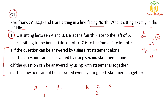Then E is at the fourth place to the left of B. So B, first left, second left, third left, fourth left — E will sit here. And who is remaining? D. So we will get this diagram for the first possibility.